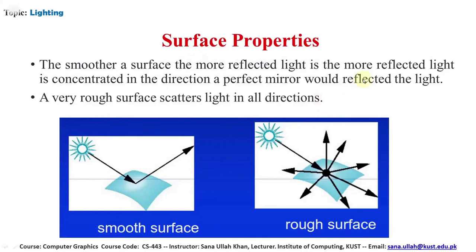Surface properties are also important. The smoother a surface is, the more the reflected light is concentrated in one direction — a perfect mirror would reflect light in a single direction. A very rough surface scatters light in all directions. If the surface is smooth, the reflected light goes in an equal, focused direction; if the surface is rough, the reflected light is scattered and varies in intensity across different directions.